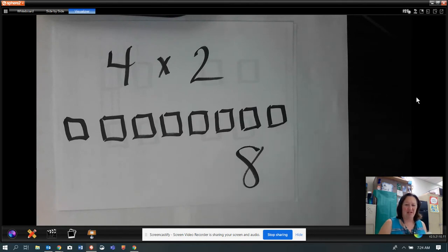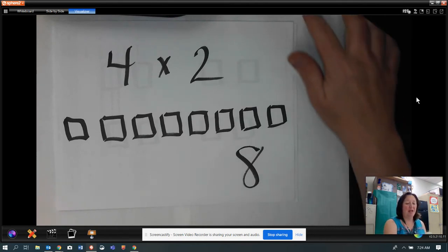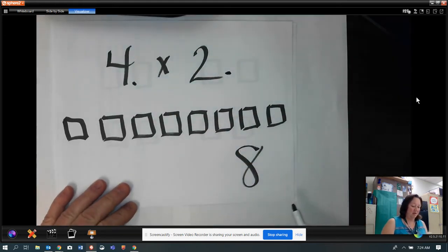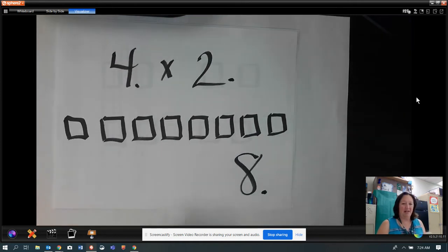Now, do you see a decimal there? No, we don't need a decimal. We could put in decimals, and if we did, the decimals would go behind the whole number. But when there's nothing else behind the whole number, we don't bother to put the decimal. We just know that it's there.